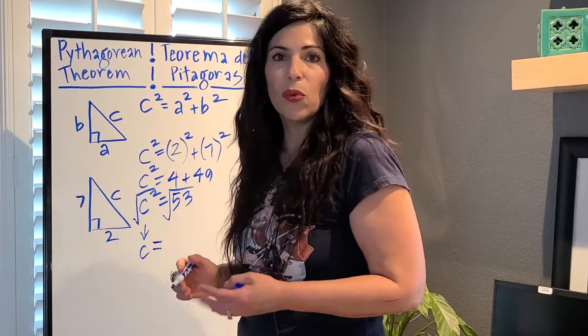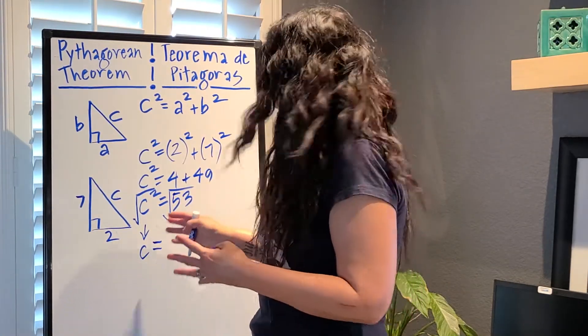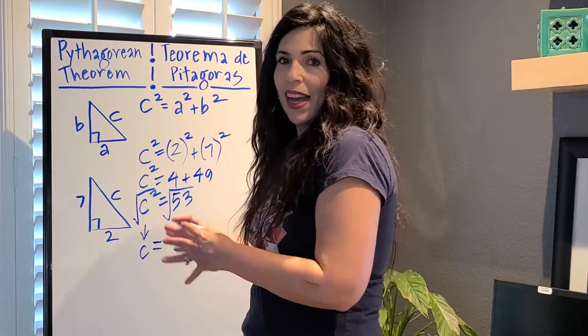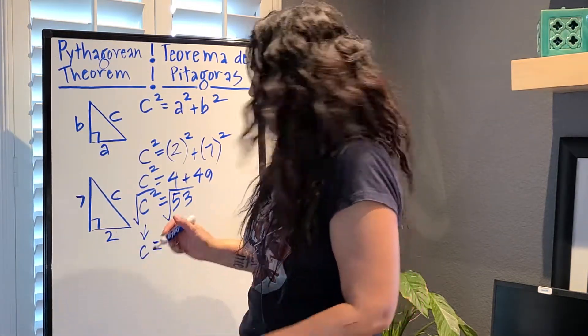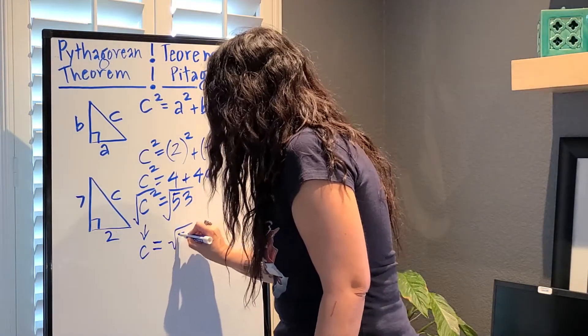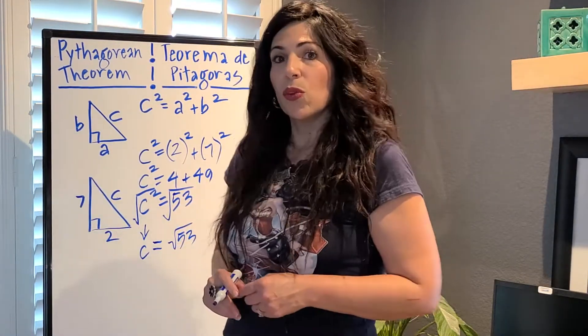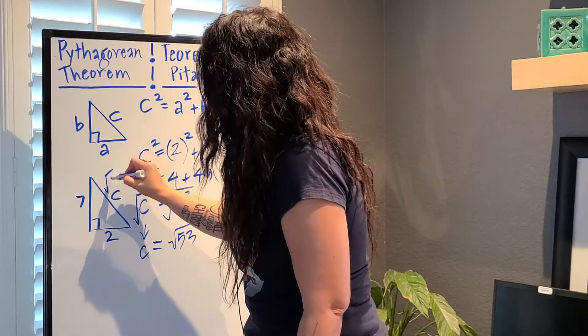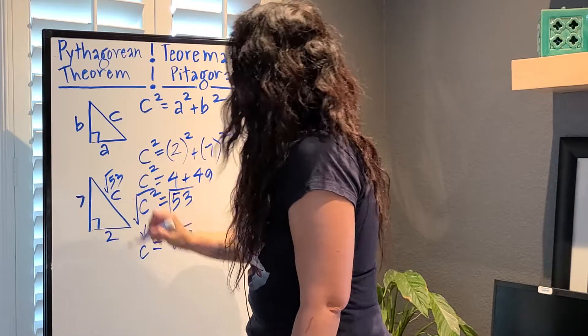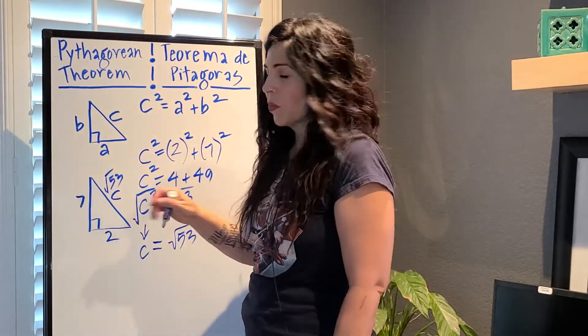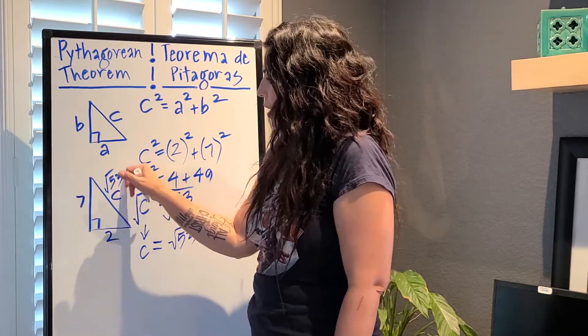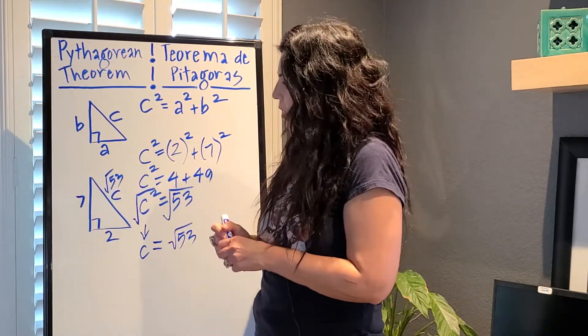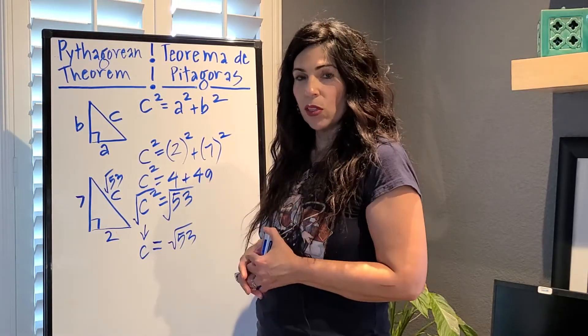And the square root of 53, we're going to leave it as the square root of 53. Y la raíz cuadrada de 54 lo vamos a dejar así en vez de convertirlo a un decimal. So now we have the square root of 53 is equal to C. And that's our value here. Entonces resolvimos por el lado más largo en el triángulo. En inglés se llama hypotenuse. So now we've solved for the hypotenuse value. And that value is 53, square root of 53.